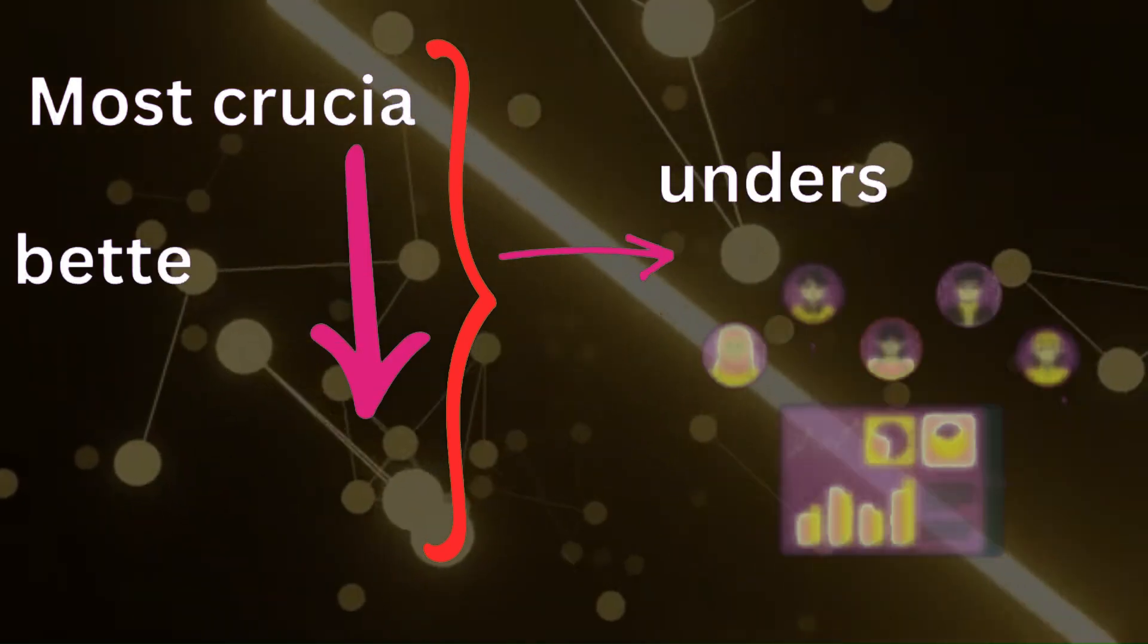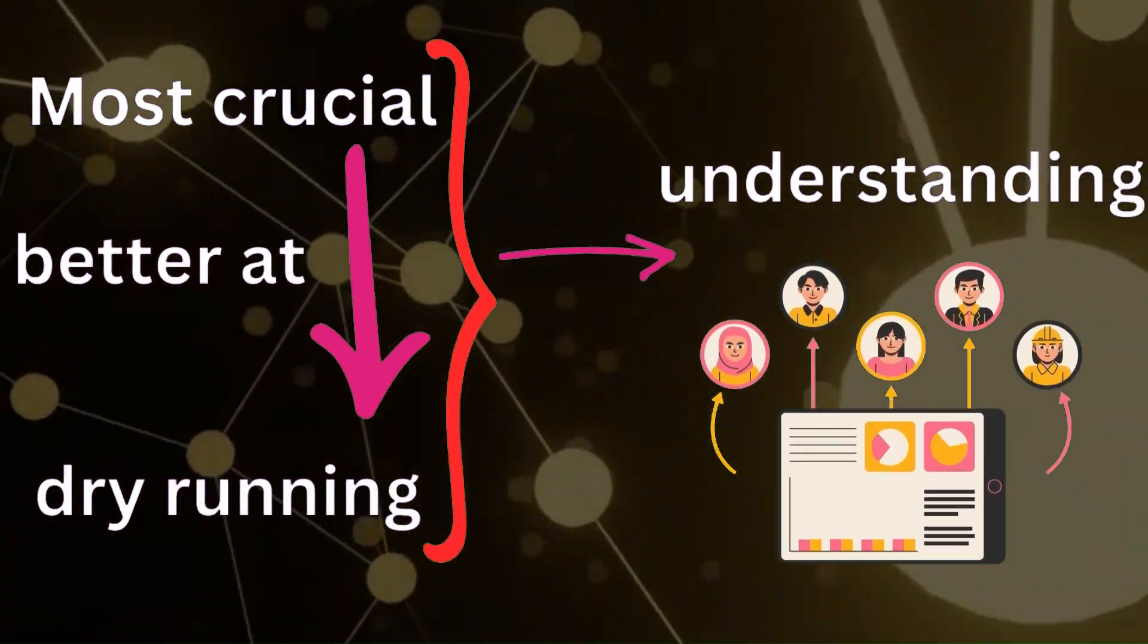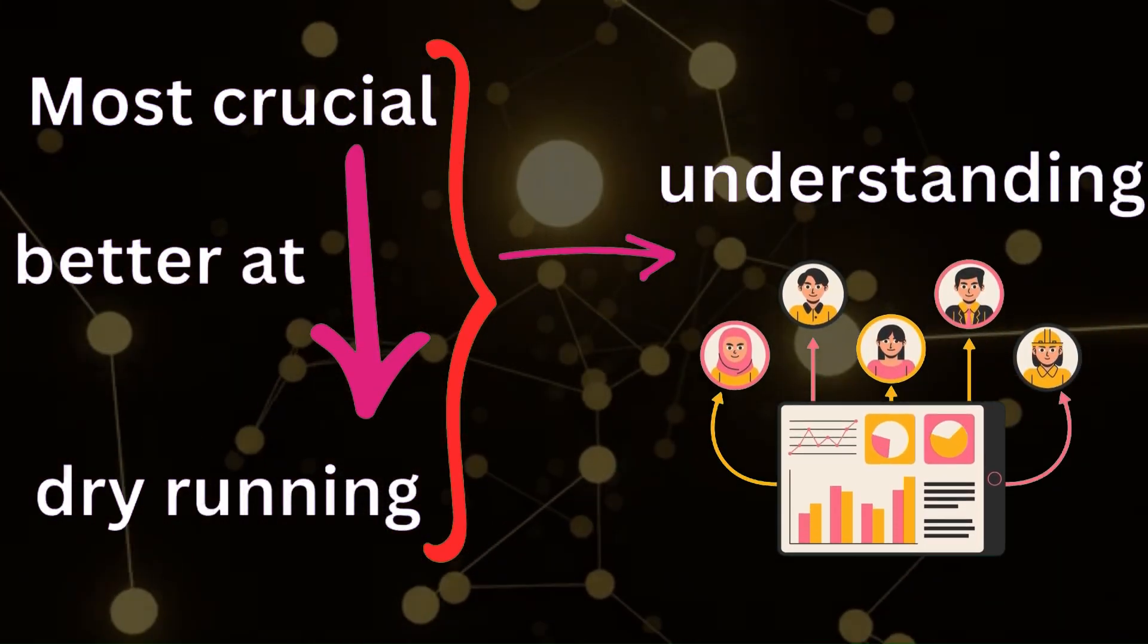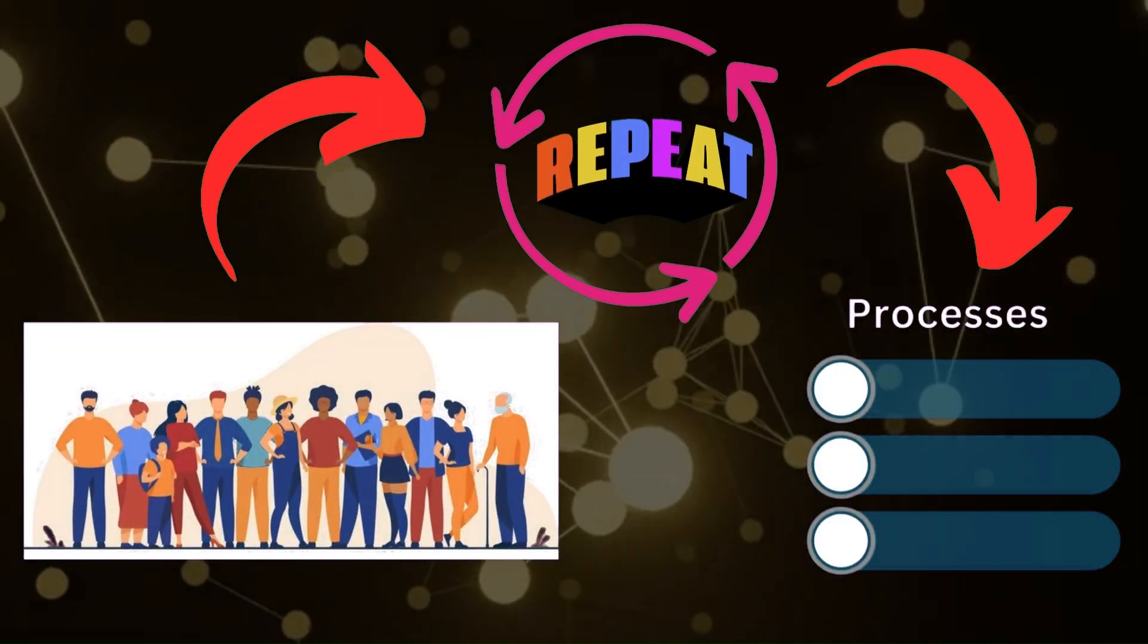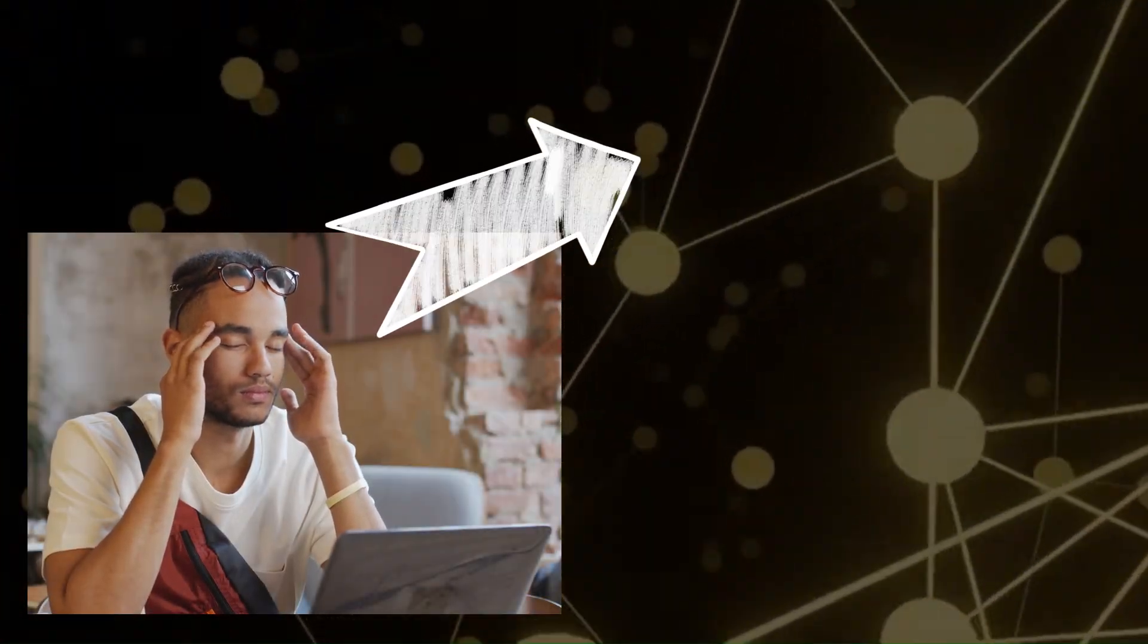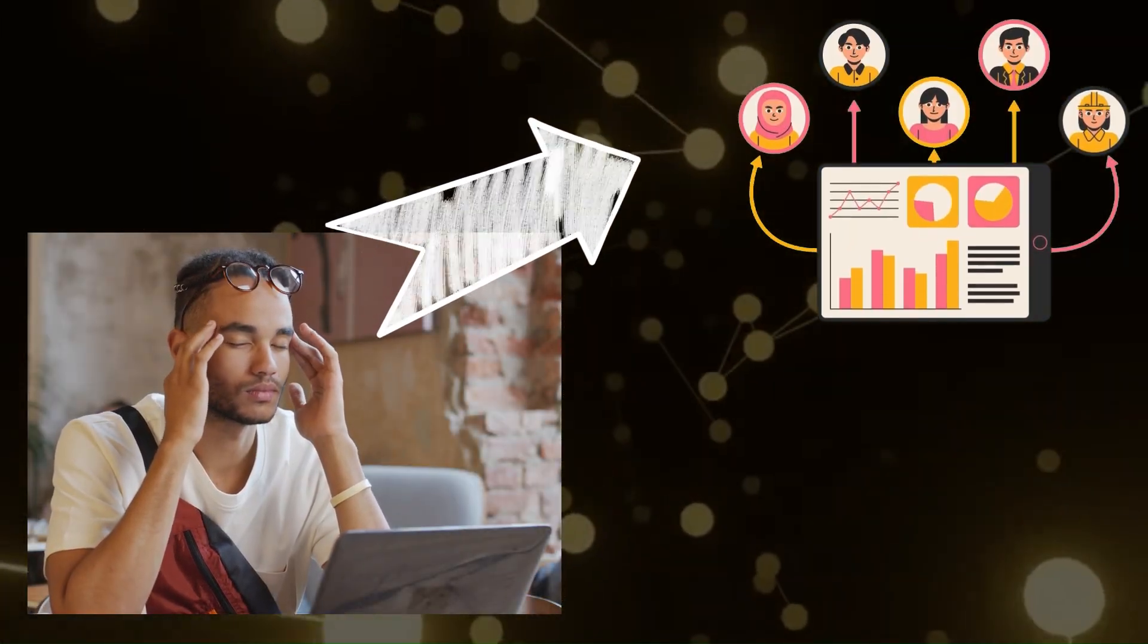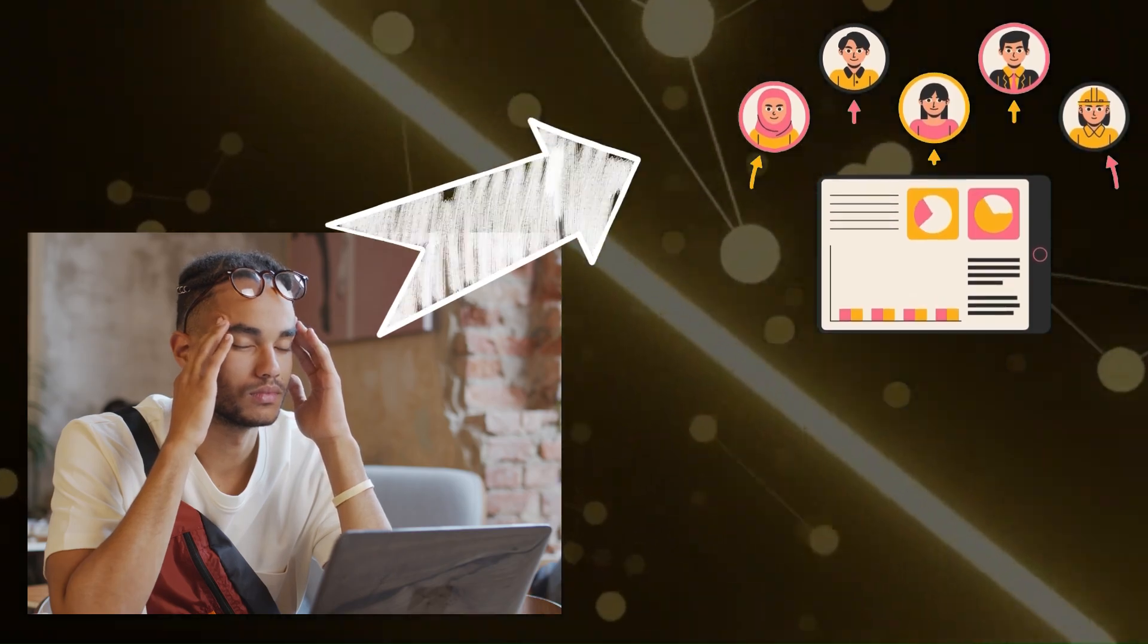The most crucial aspect of getting better at dry running code is understanding data flow. Many people grasp the concept of loops, how they iterate and repeat processes. However, the true challenge lies in understanding how data flows through each step of the loop. How does data get processed and transformed at each stage? This is not straightforward.